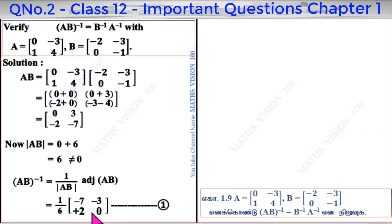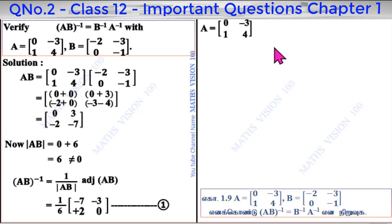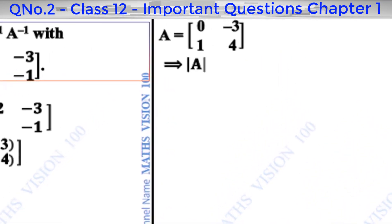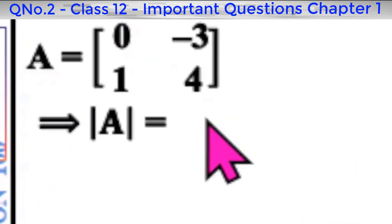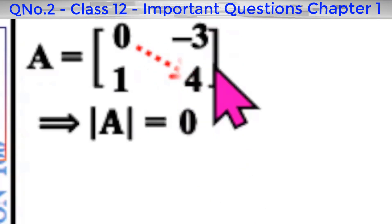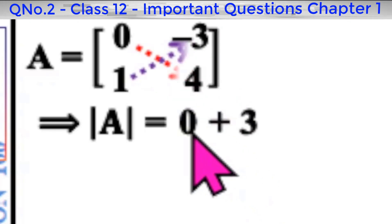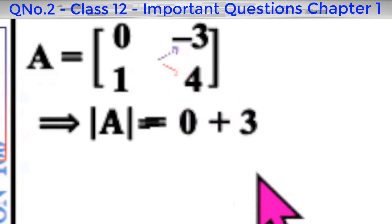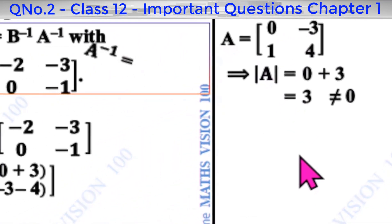Now we find A inverse. Determinant of A: principal diagonal 0 into 4 is 0, and the other diagonal 1 into minus 3 is minus 3, so determinant of A equals 0 minus minus 3 equals 3, which is not equal to 0. So A inverse exists.